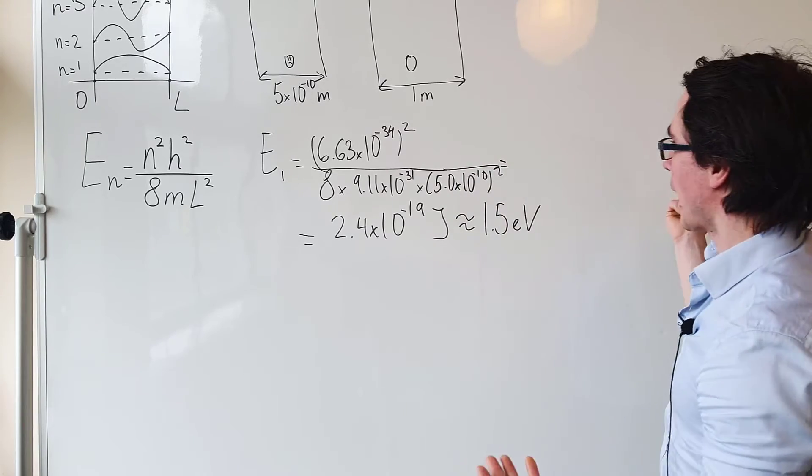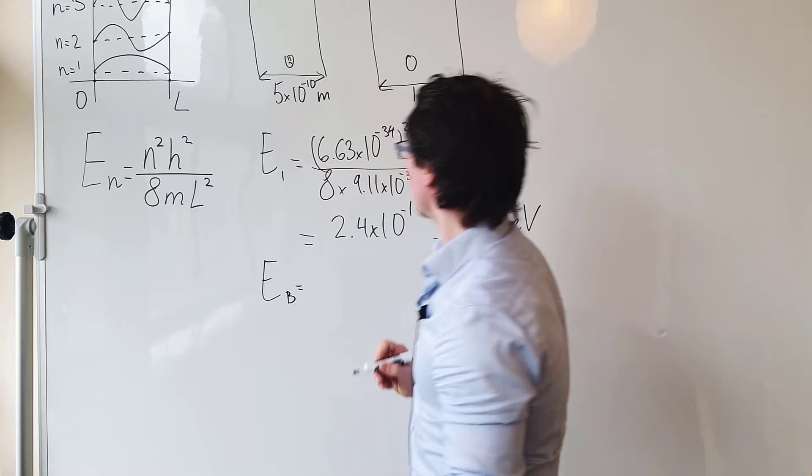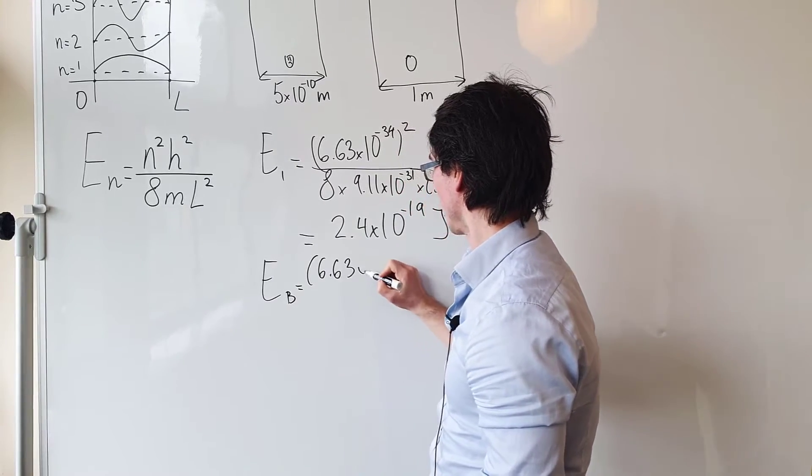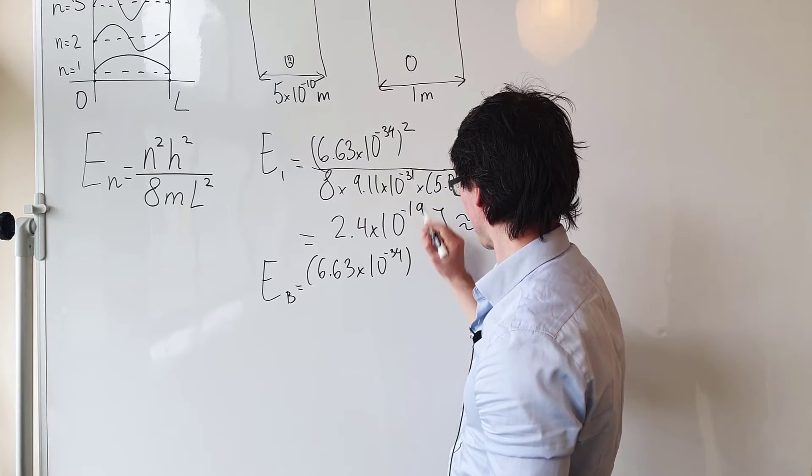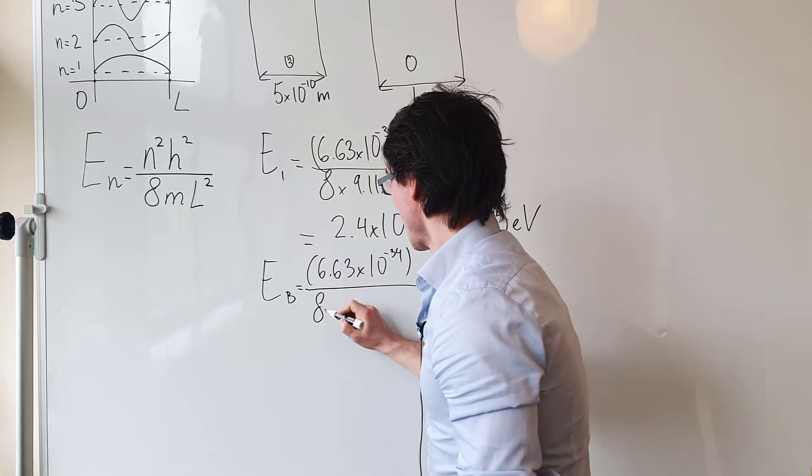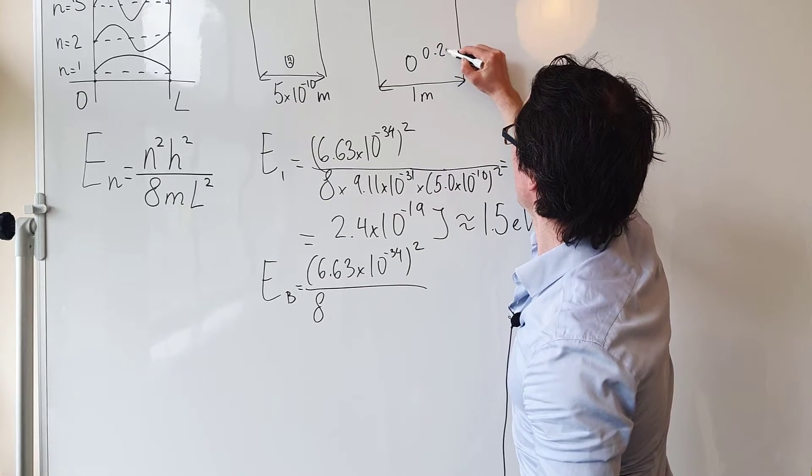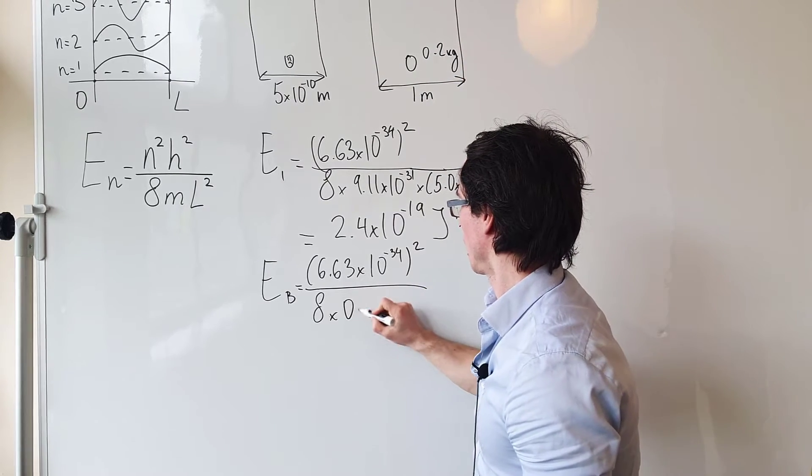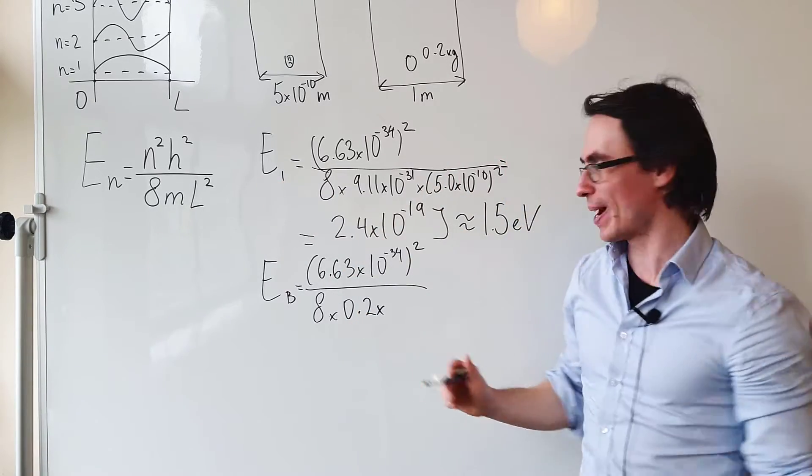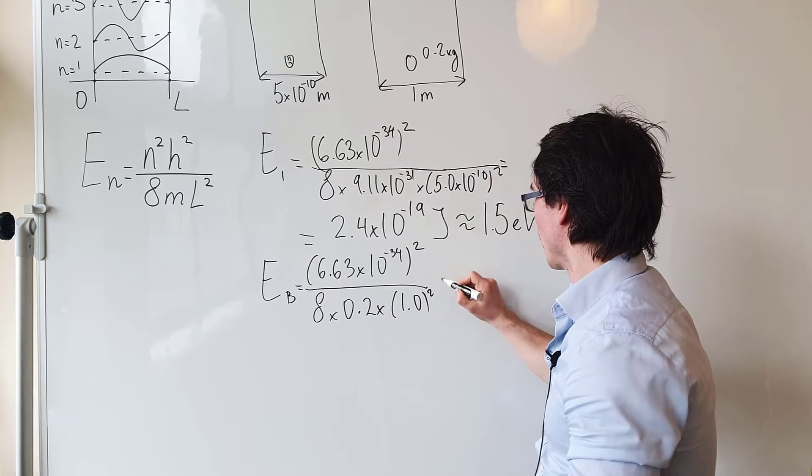For the billiard ball, E subscript B will be equal to Planck's constant squared, which is 6.63 times 10 to the power of minus 34 joules seconds squared, divided by 8. Let's say the mass of the billiard ball is 0.2 kg, so times 0.2, multiplied by the length squared, which is just 1.0 squared, which is 1.